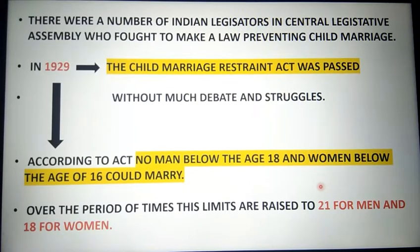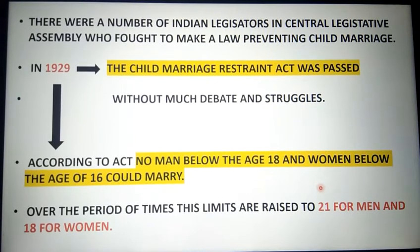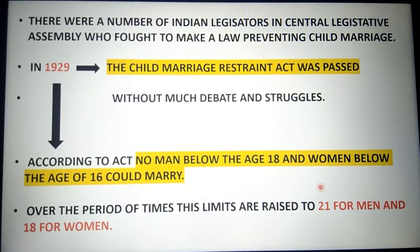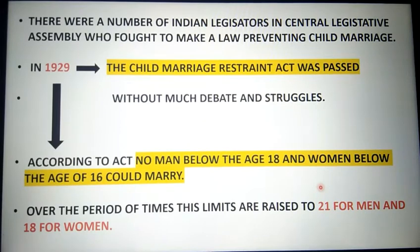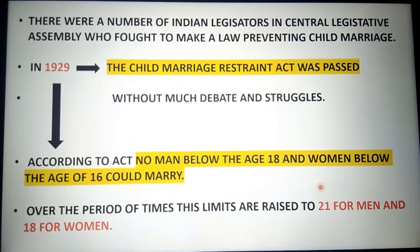There was a legislator in the Central Legislative Assembly who fought to make a law preventing child marriage, and in 1929 — very importantly — the Child Marriage Restraint Act was passed. This came after much debate and struggle.